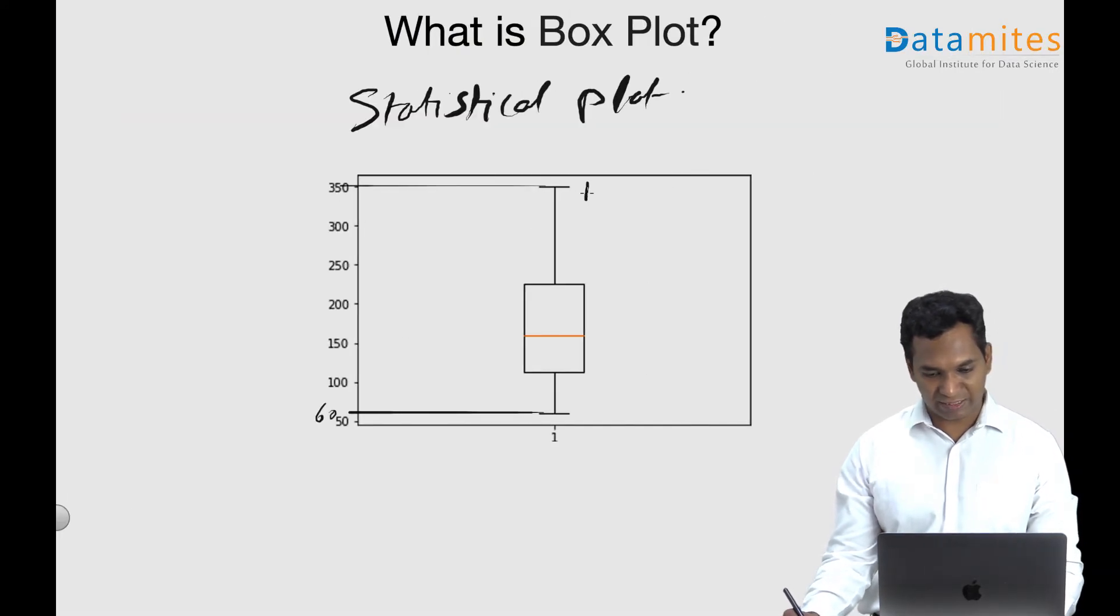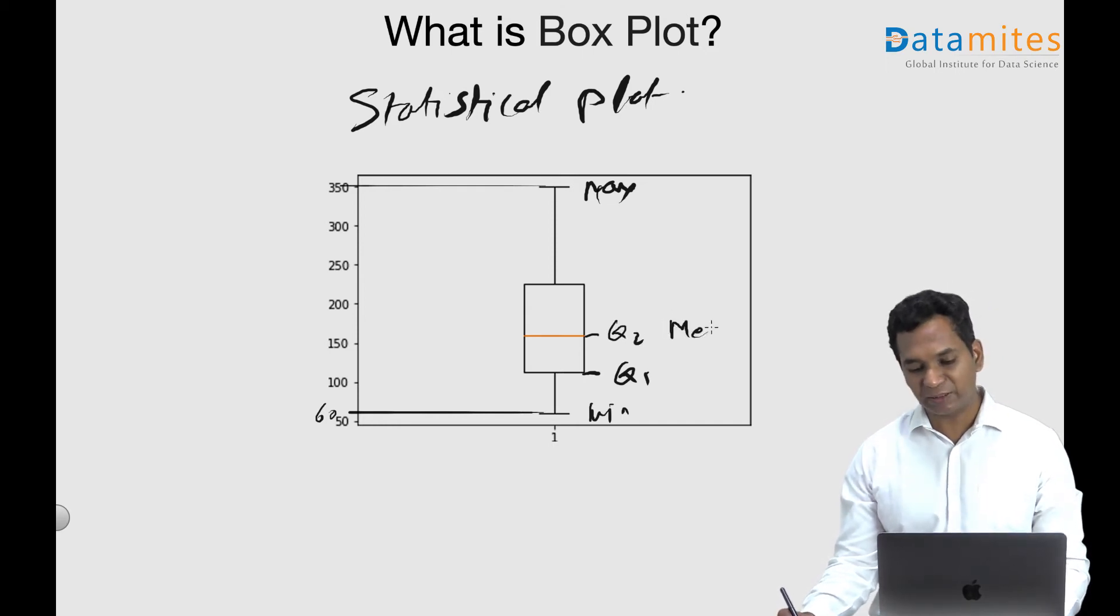You can see that this is max, this is minimum salary, and this is your quartile 1 or Q1. This is your quartile 2, Q2, or simply known as median. Median is the 50 percentile mark, which is quartile 2.